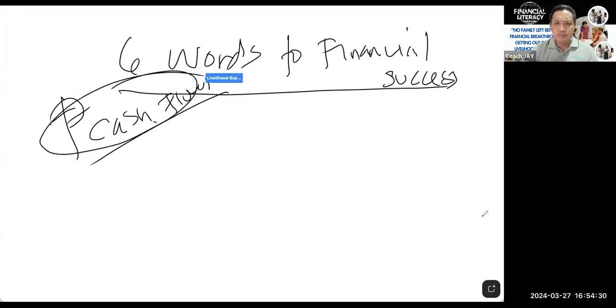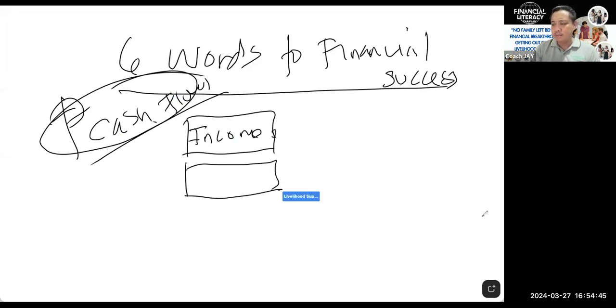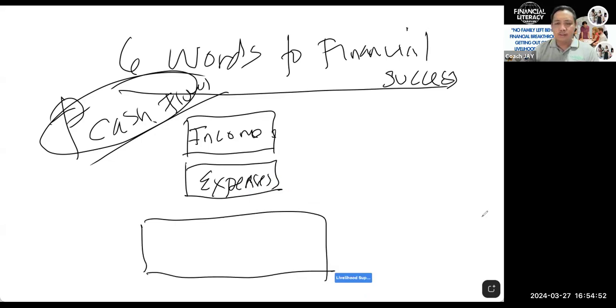What are these six words to financial success? Number one, we have income. Then we have expenses, asset, liability, and cash flow.